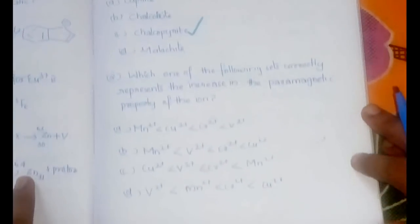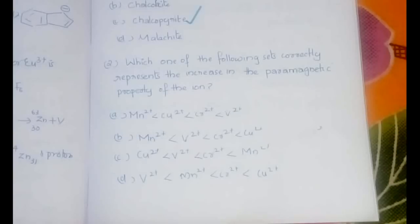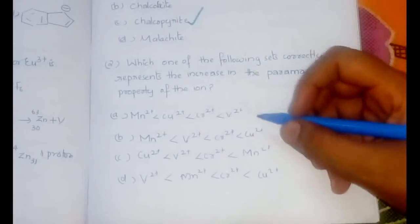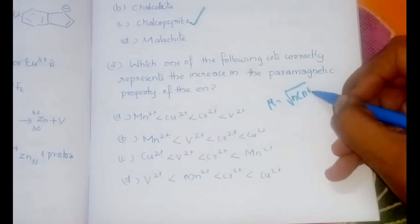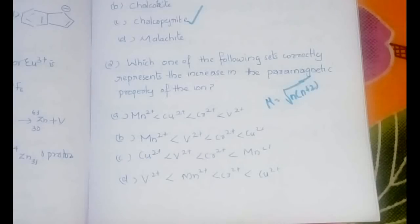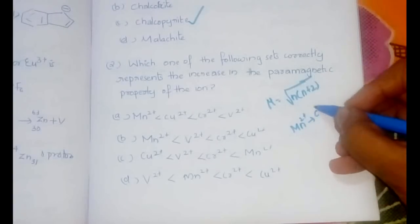The second question is related to magnetic property. In D-block elements, the main questions that usually come are from color and magnetism. The question asks: which of the following sets correctly represents the increase in paramagnetic property? We count the number of unpaired electrons. The magnetic moment is given by the spin-only formula: √(n(n+2)), where n is the number of unpaired electrons. For Mn²⁺, which is d⁵, all five electrons are unpaired, giving a magnetic moment of approximately 6.